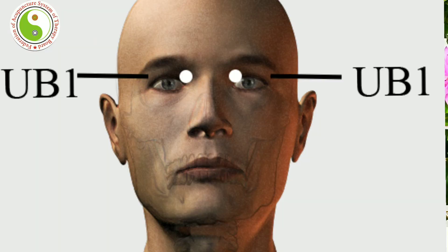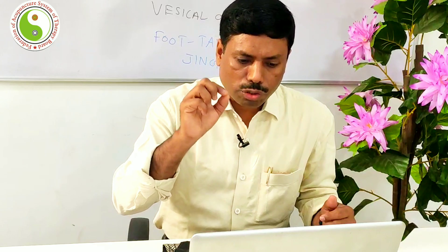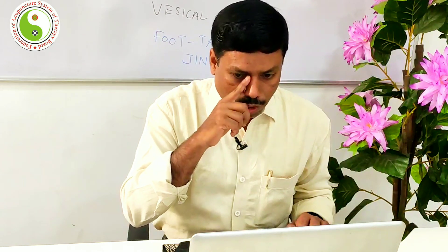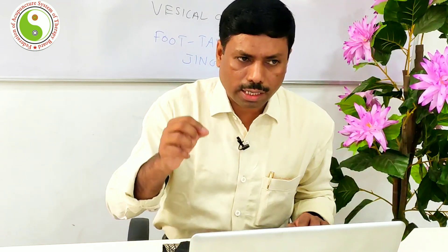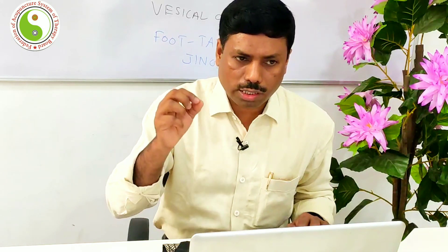The first point is called Jingming, UB1. That point is located on the inner canthus of the eye — you just look at the white dot, very close to the eye. This is a really good point since it communicates to three arteries: the angular artery, the ophthalmic artery, and the lacrimal artery. It is also the meeting point of the stomach and small intestine meridians.